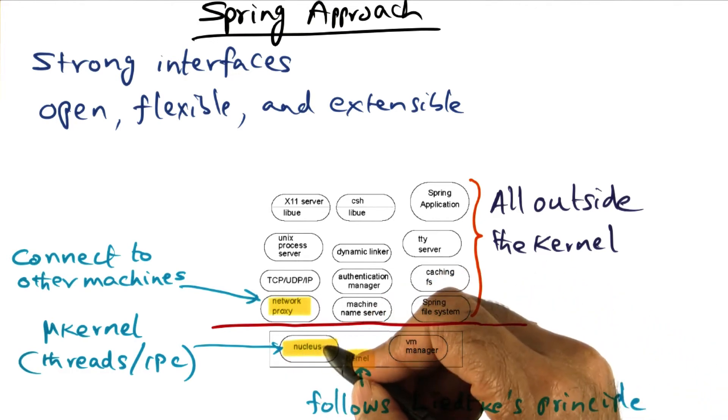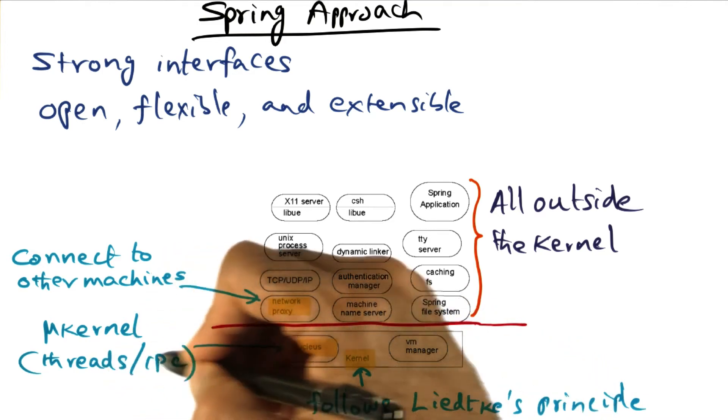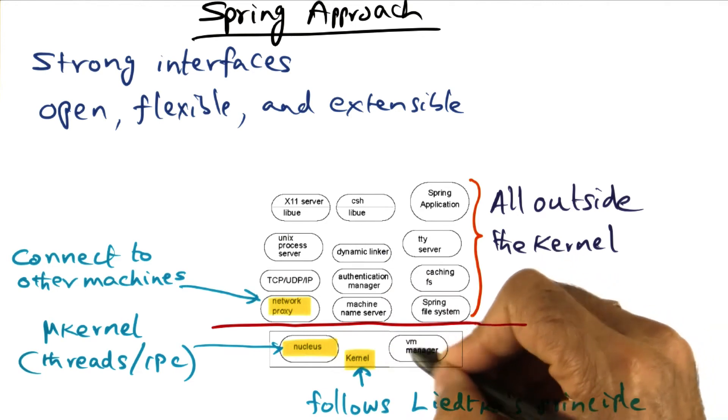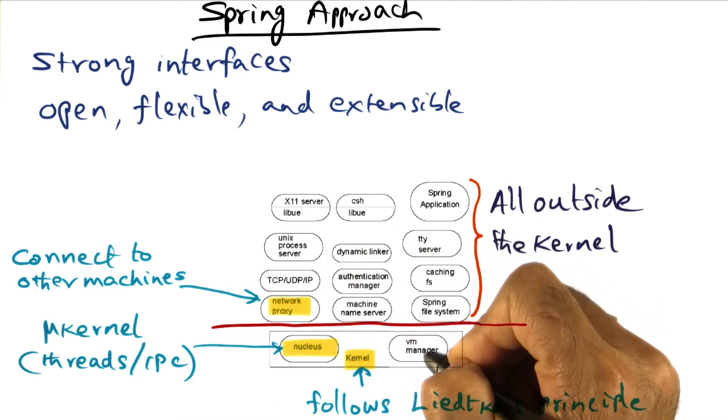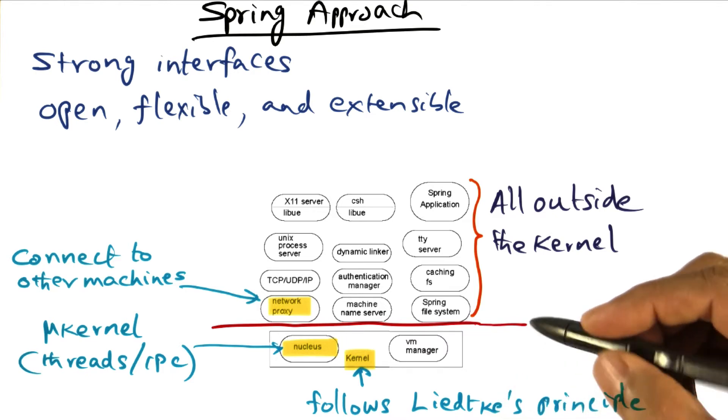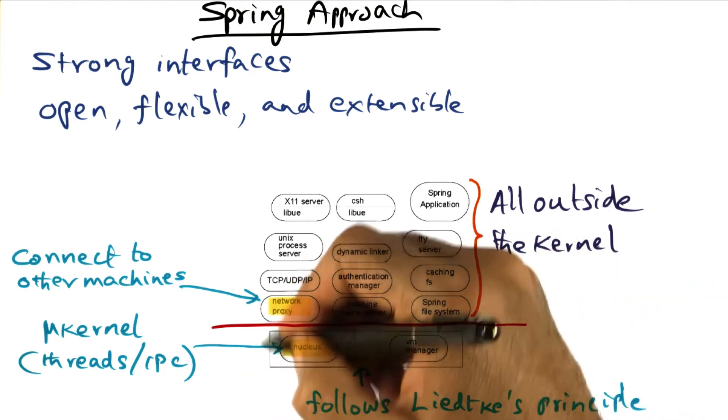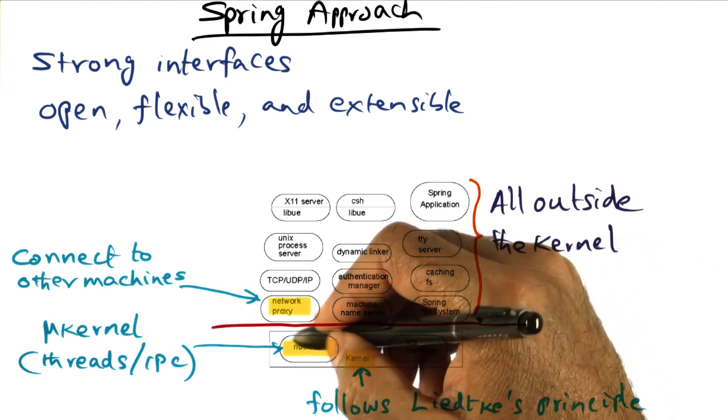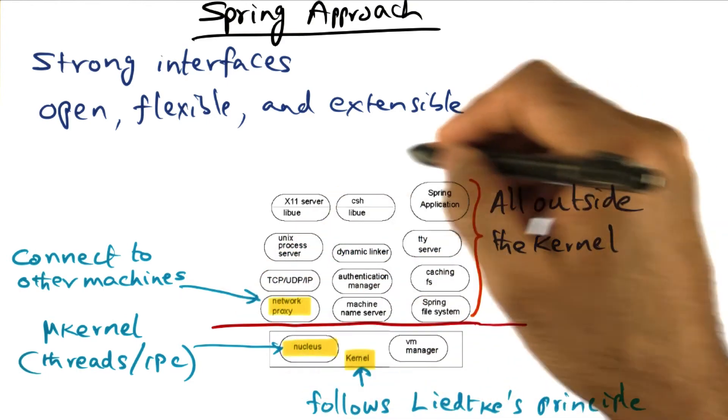What you see below this red line is Spring's idea of a microkernel. In fact, there are two parts to it. There is a nucleus, which in Spring is the entity that provides the abstractions of threads and inter-process communication among the threads. The kernel itself is made up of nucleus plus the virtual memory manager. So if you put these two things together, the nucleus gives you threads and IPC, and the VM manager gives you memory management. If you remember back to our good old friend Liedtke's principle of what a microkernel should provide, you see that what is below this red line is exactly Liedtke's principle. That is, the microkernel is providing the abstraction of threads and IPC and an abstraction of memory.